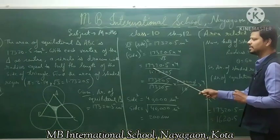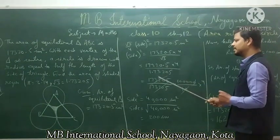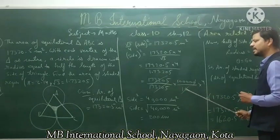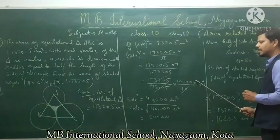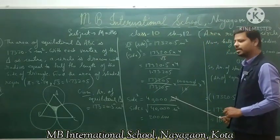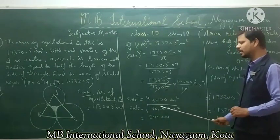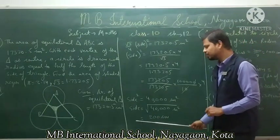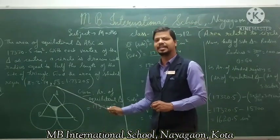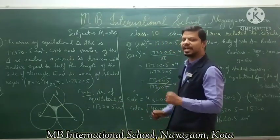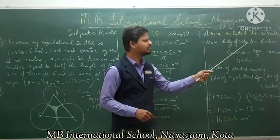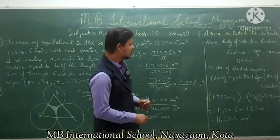After simplification, side squared equals 40,000 centimeter square. Taking the square root, the side of the equilateral triangle is 200 centimeter. Since the radius equals half the length of the side of the triangle, the radius of the circle is 200 divided by 2, that is 100 centimeter.